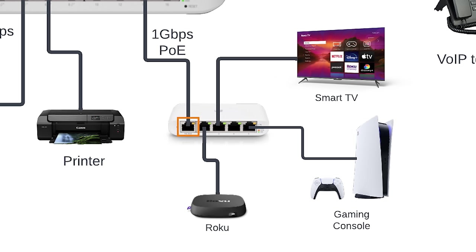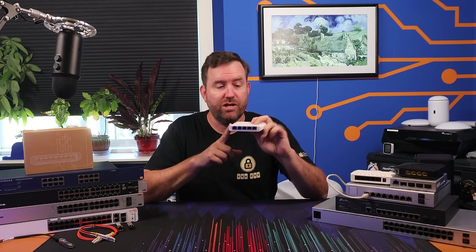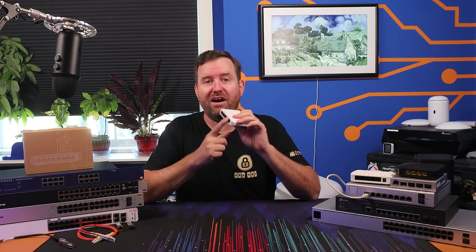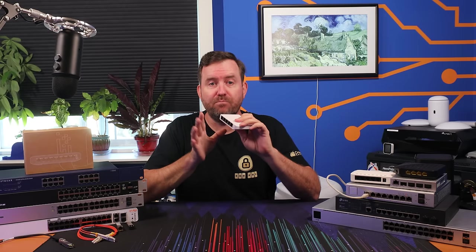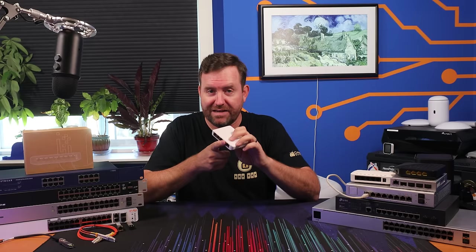this $29 five-port Flex Mini switch from Ubiquiti is perfect for behind your entertainment center. You can feed one port in from another switch and then you've got four ports for expanding wired access to your television, your Roku, your PlayStation, your Nintendo Switch, whatever other devices you happen to have. Another thing to consider is the speed of the ports in your switch. For smaller switches like this Flex Mini, one gigabit connectivity is very standard, since most of the devices that you're going to plug in here can't go or don't need to go faster than that.